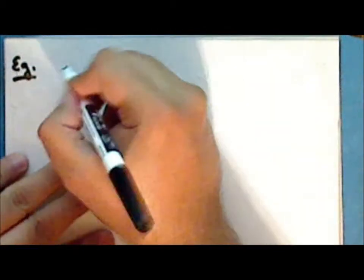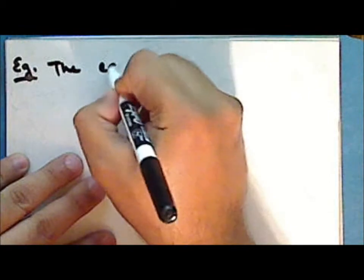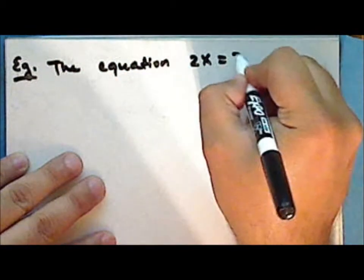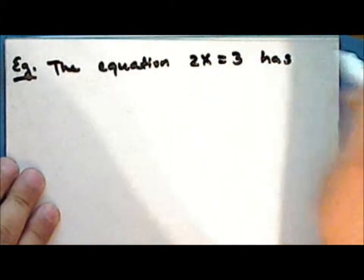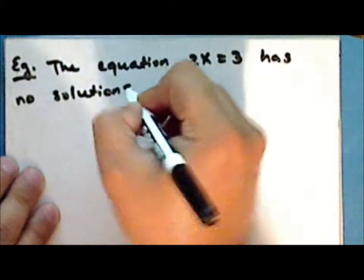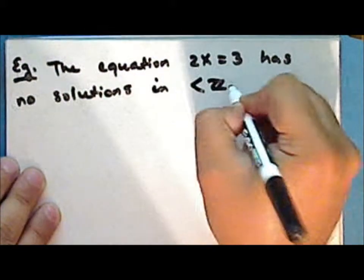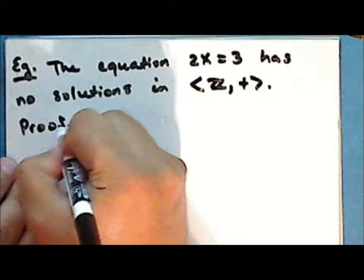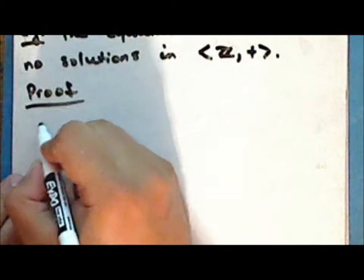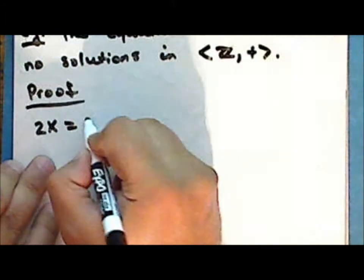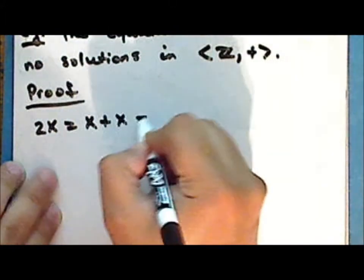Now the last exercise from the previous lecture: we will show that the equation 2x = 3 has no solutions in the group consisting of the integers under addition. Proof: the equation 2x = 3 is the same as x + x = 3. Notice that 1 + 1 = 2 and 2 + 2 = 4, where 1 and 2 are consecutive integers.